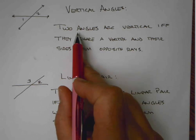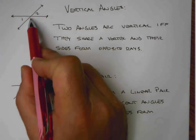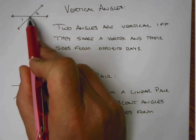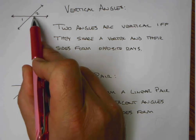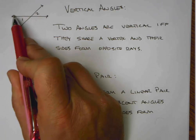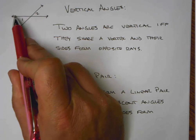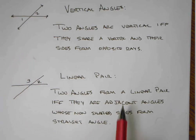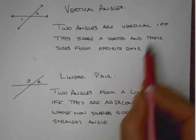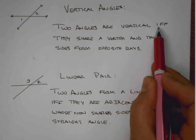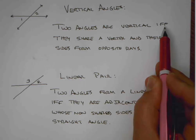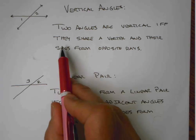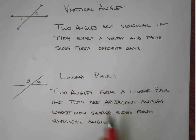Vertical angles are formed when the two angles share a vertex, but the sides of the angles form opposite rays. Notice that this side and this side are opposite rays — together they make a straight line. Then this side and this side form opposite rays. The definition is: two angles are vertical if and only if they share a vertex and their sides form opposite rays. Remember, this is our biconditional phrase, 'if and only if,' which can be used to determine if the definition is good.